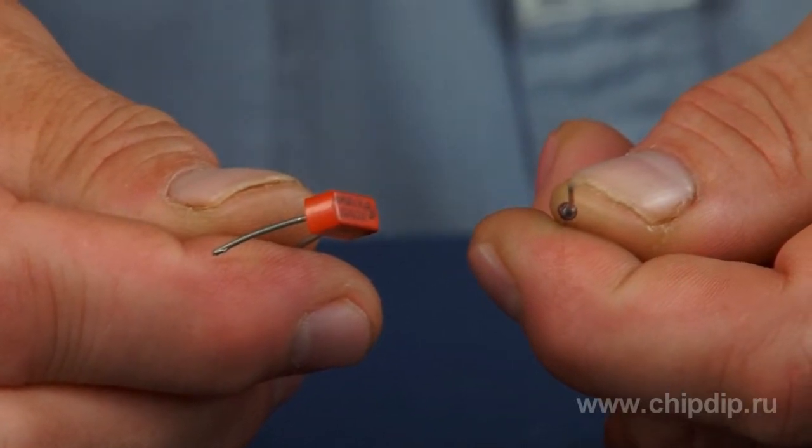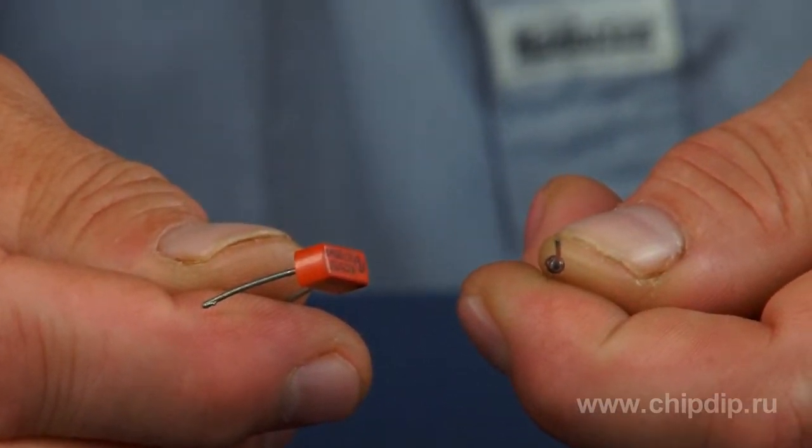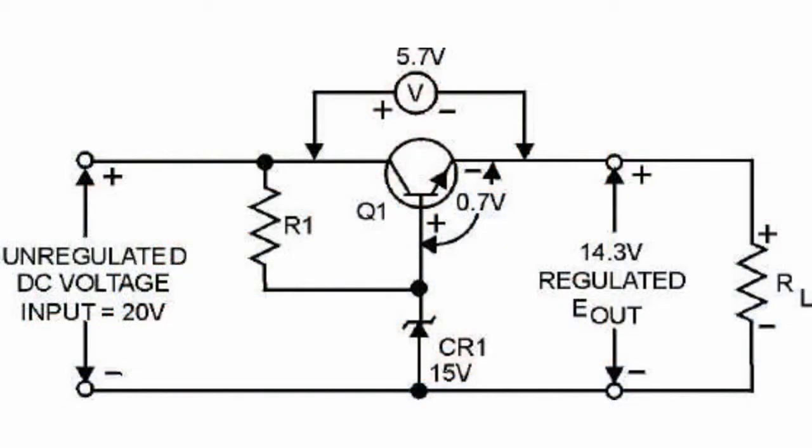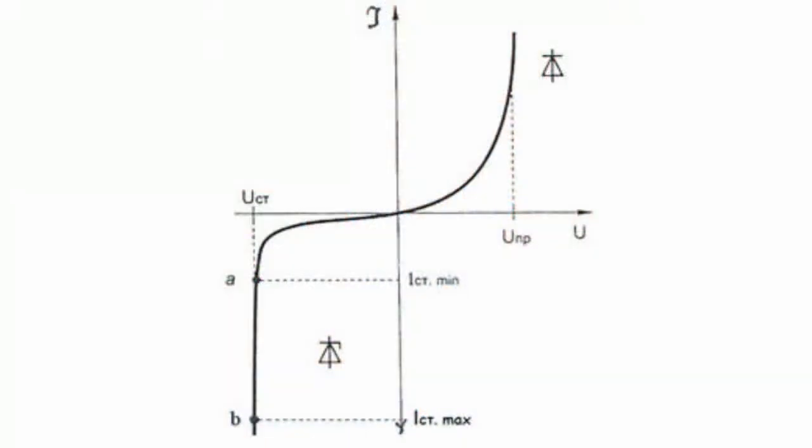A stabilizing diode, or stabilitron, can be represented as a simple silicon diode with a specific feature. When the voltage exceeds a specific level, it goes backwards and functions as resistance. The voltage is supplied to the stabilitron with reverse polarity. In general, a stabilitron is a diode which doesn't rectify current but stabilizes it — it maintains the voltage level and stops operating when the voltage threshold is exceeded.